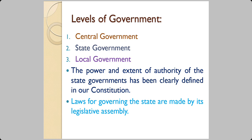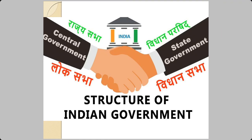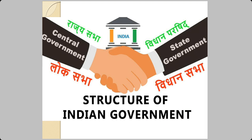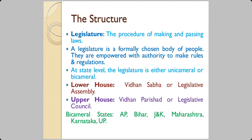Laws for governing the states are made by the legislative assembly. We have a bicameral type of legislature — two houses: the upper house and the lower house, or the Lok Sabha and the Vidhan Sabha. A legislature is a formally chosen body of people who have the authority to make rules and regulations. At state level, the legislature is either unicameral or bicameral.